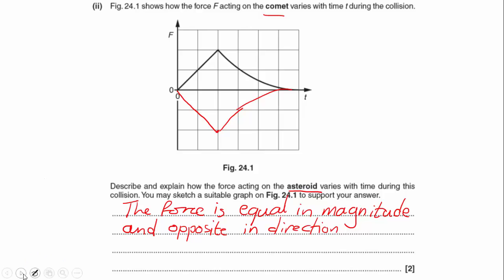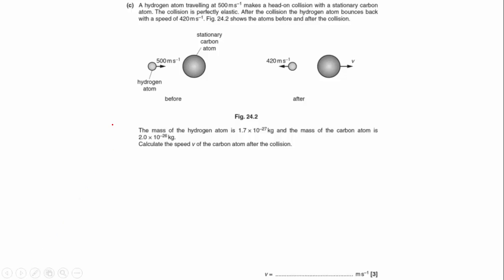Moving on, we are now looking at a hydrogen atom traveling at 500 meters per second making a head-on collision with a stationary carbon atom. The collision is perfectly elastic, so kinetic energy is conserved.